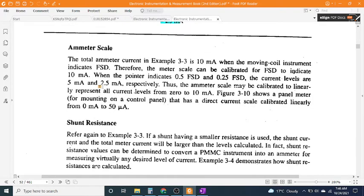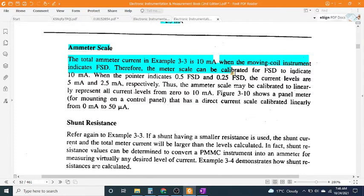Ammeter scale: The total ammeter current in Example 3-3 is 10 mA when the moving coil instrument indicates FSD. Therefore, the meter scale can be calibrated for FSD to indicate 10 mA.